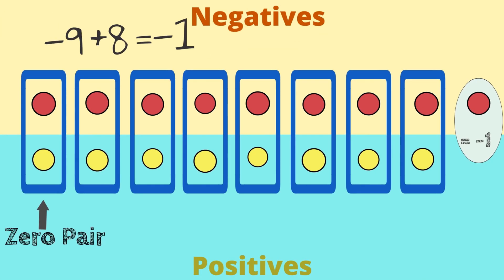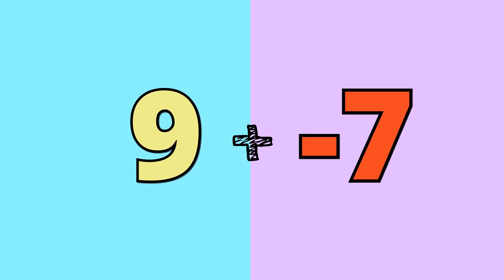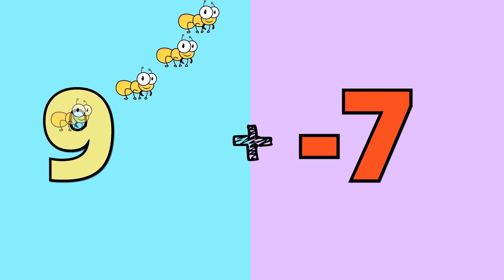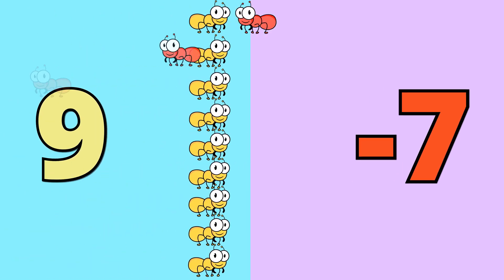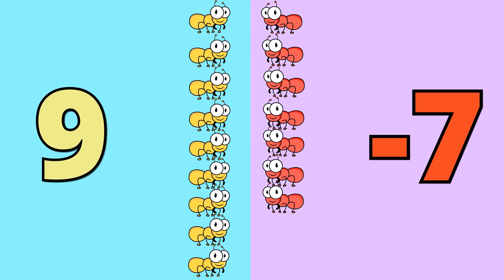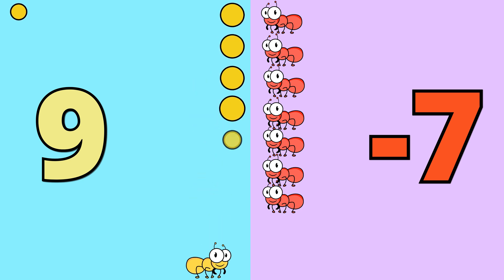Let's look at another example. Here we're adding 9 plus negative 7. That is the same as 9 yellow ants and 7 red ants. We will use 9 counters to represent our positive number,